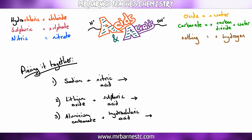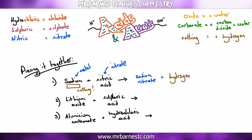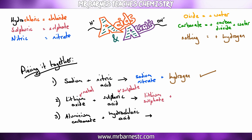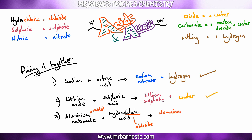Putting it together: sodium reacting with nitric acid — nitric acid makes a nitrate, the metal is sodium, so the salt is sodium nitrate; no oxide or carbonate, so hydrogen is produced. Lithium oxide and sulfuric acid — sulfate salt gives lithium sulfate; there's an oxide, so water is the byproduct. Aluminium carbonate plus hydrochloric acid — chloride salt gives aluminium chloride; carbonate means carbon dioxide and water are produced.